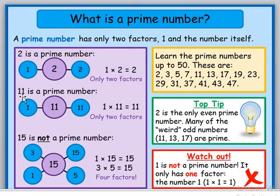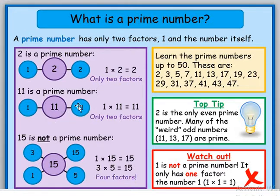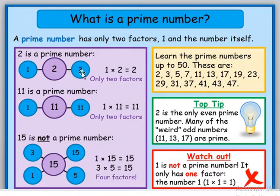Number 11 is also a prime number because it has only two factors: 1 and 11. Multiplying 1 by 11 gives 11, and no other combination of numbers can produce 11. In other words, 11 is not divisible by any number other than 1 and itself. Similarly, 2 is not divisible by any number other than 1 and itself, so all prime numbers are divisible by only themselves and 1.